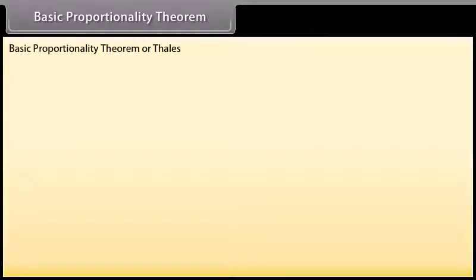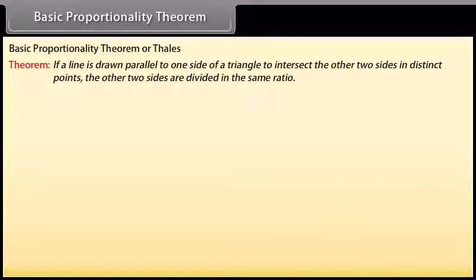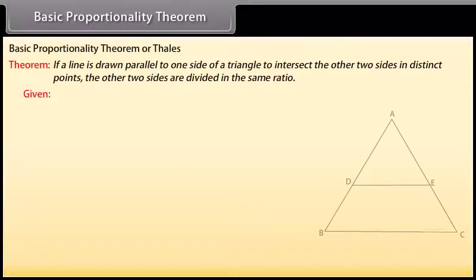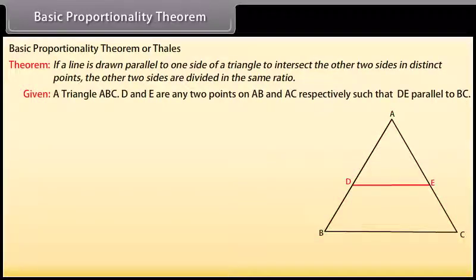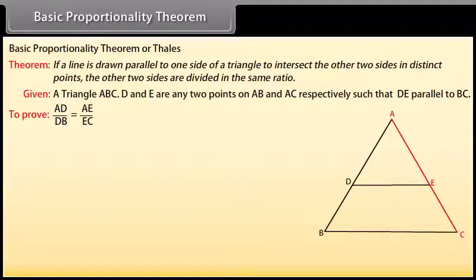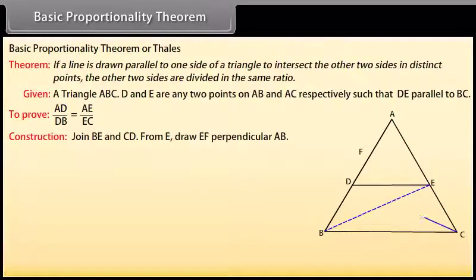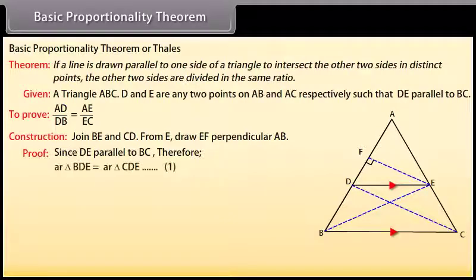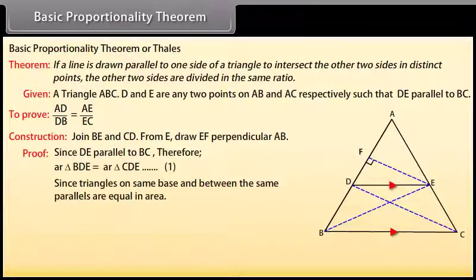Basic Proportionality Theorem, or Thales Theorem: if a line is drawn parallel to one side of a triangle to intersect the other two sides in distinct points, the other two sides are divided in the same ratio. Given: a triangle ABC; D and E are any two points on AB and AC respectively such that DE is parallel to BC. To prove: AD upon DB equals AE upon EC. Construction: join BE and CD. From E, draw EF perpendicular to AB. Proof: since DE is parallel to BC, area of triangle BDE equals area of triangle CDE. Mark it as one.